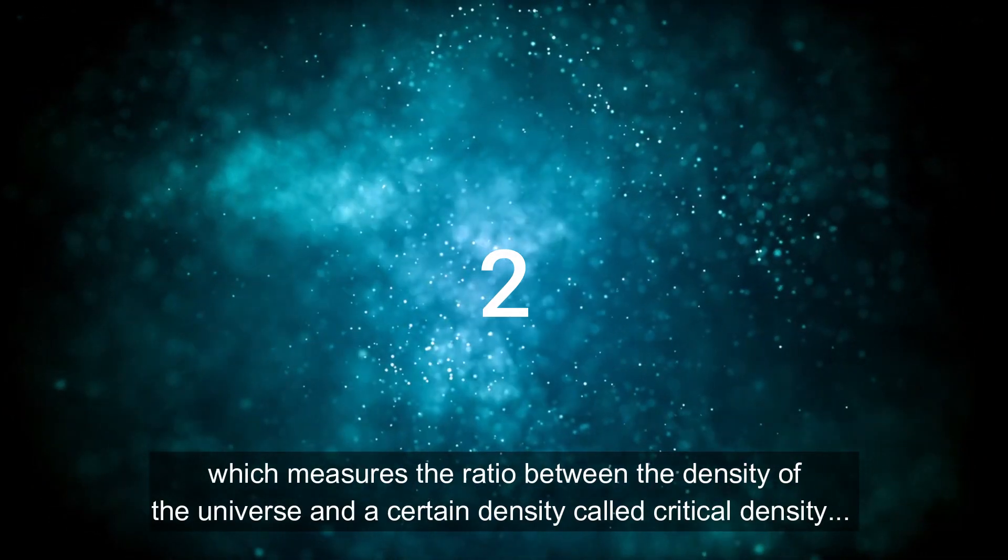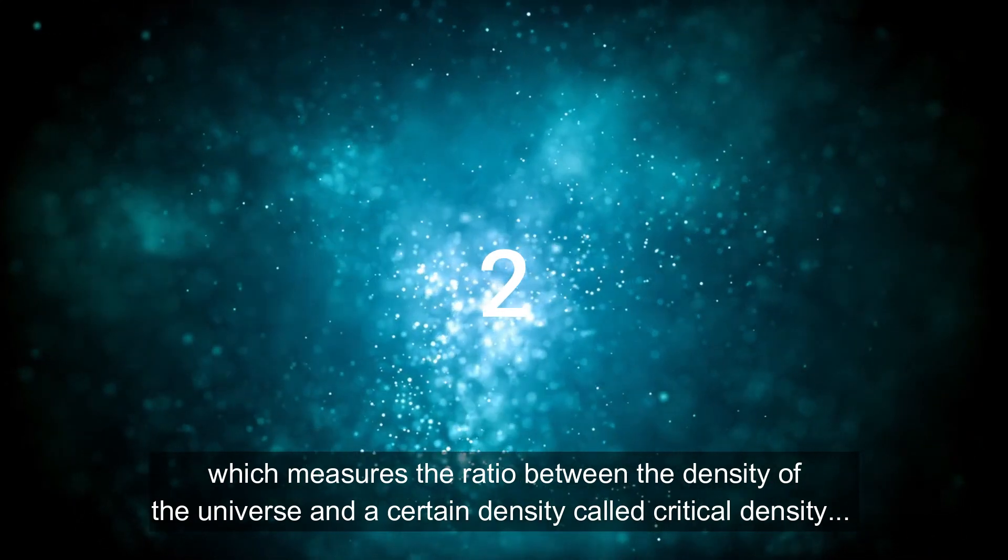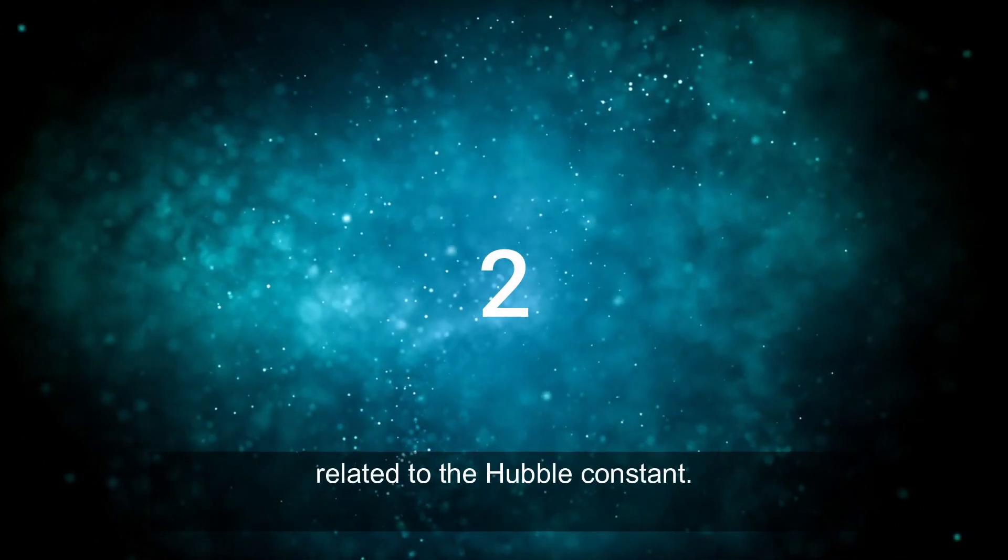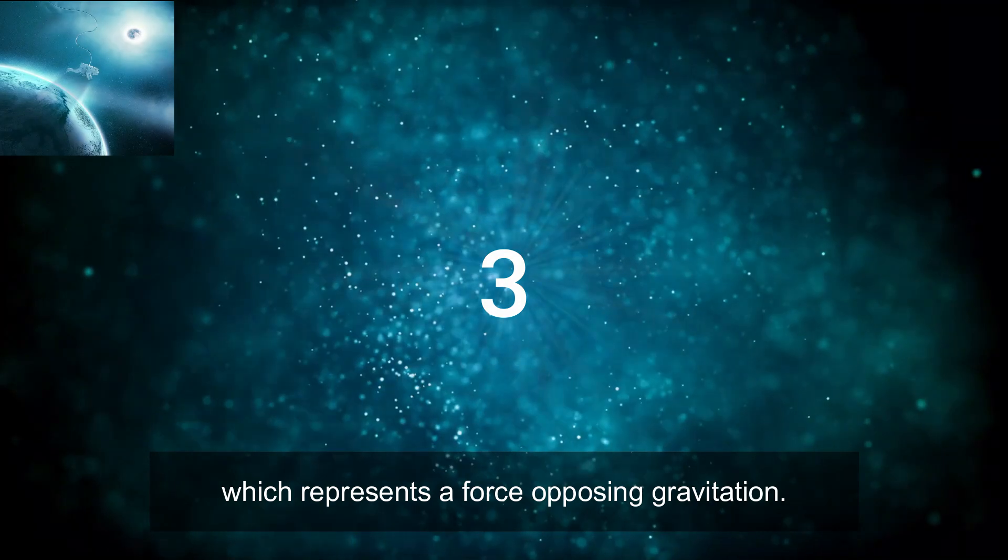2. the mass density parameter, which measures the ratio between the density of the universe and a certain density called critical density, related to the Hubble constant. 3. the cosmological constant, which represents a force opposite gravitation.